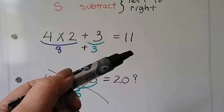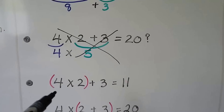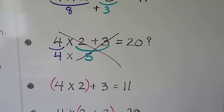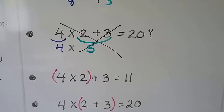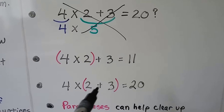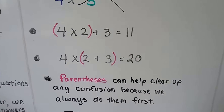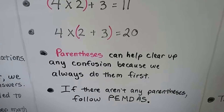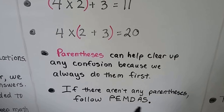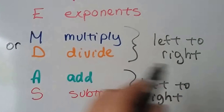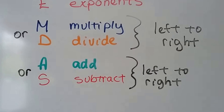If there were parentheses, we would do inside the parentheses first — that's an 8 — then add the 3, giving us 11. Parentheses make it easier because we always do them first. If there aren't any parentheses, just follow PEMDAS: start with exponents, then multiply or divide, then add or subtract.